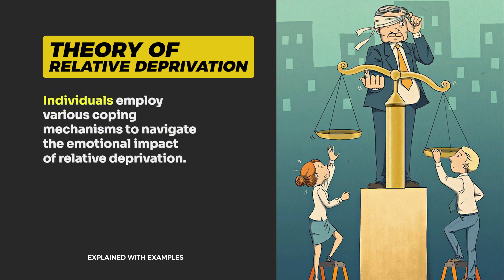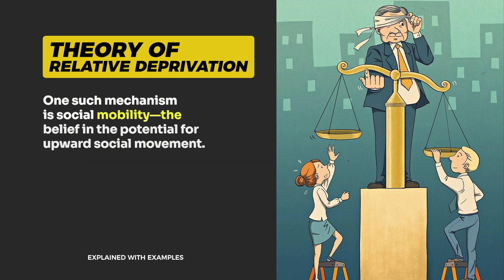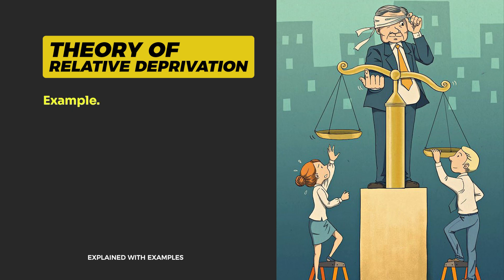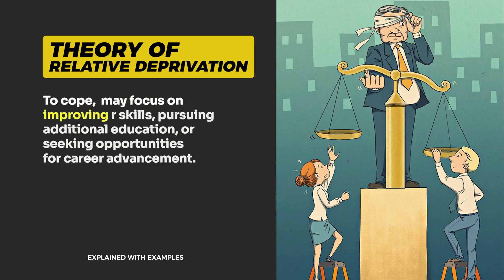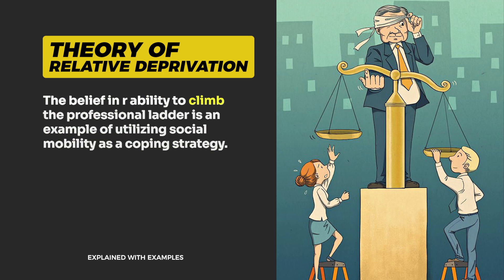Mechanisms of coping with relative deprivation. Individuals employ various coping mechanisms to navigate the emotional impact of relative deprivation. One such mechanism is social mobility — the belief in the potential for upward social movement. For example, consider a scenario where a colleague receives a promotion and you experience relative deprivation. To cope, you may focus on improving your skills, pursuing additional education, or seeking opportunities for career advancement. The belief in your ability to climb the professional ladder is an example of utilizing social mobility as a coping strategy.